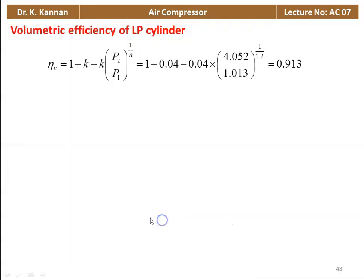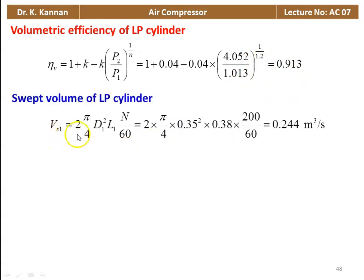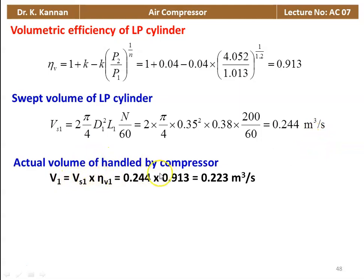Volumetric efficiency of the LP cylinder: η_V = 1 + K − K × (P2/P1)^(1/n) = 1 + 0.04 − 0.04 × (4.052/1.013)^(1/1.2) = 0.913. Swept volume of LP cylinder Vs1 = 2 × (π/4) × D1² × L × N/60 = 2 × (π/4) × 0.35² × 0.38 × 200/60 = 0.244 m³/s (factor 2 for double-acting). Actual volume V1 = Vs1 × η_V = 0.244 × 0.913 = 0.223 m³/s.